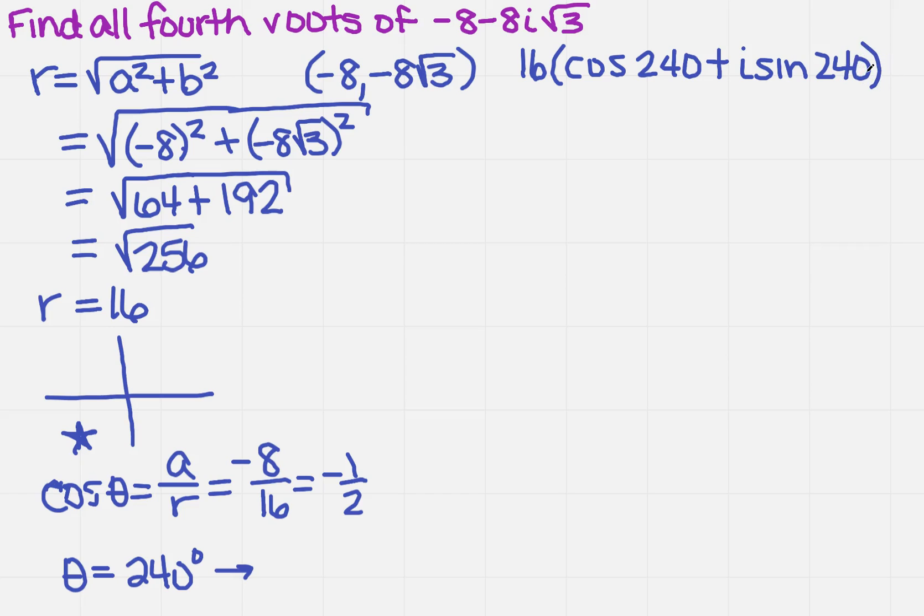But now, what did it originally ask me for? It wants the fourth, all the fourth roots. Well, if I'm going to do the fourth roots, then I need to do 16 to the 1 fourth, right? That would be taking the fourth root of 16, and now this becomes the cosine of what?